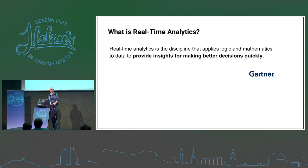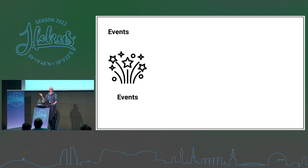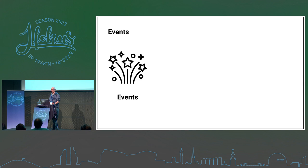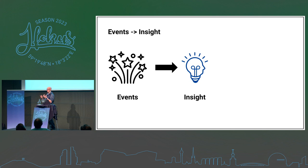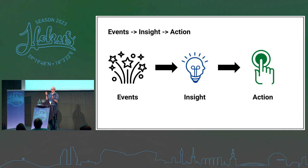How do we make a more practical definition? You probably have the idea of events — things that generally happened in the past and we have a representation of them. It could be: I got on the tram, I got on the plane, I ordered something, I did a search — something that happened which has been captured. Events are great, but in this context we want to learn something from them. What insight can we get? You did a search for pizza — okay, so what are we going to do now?